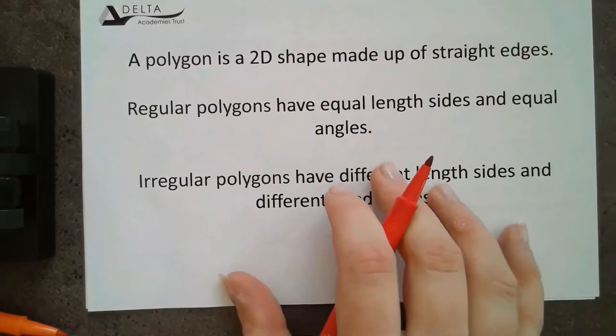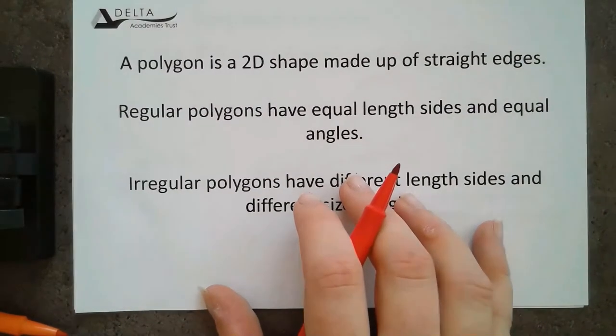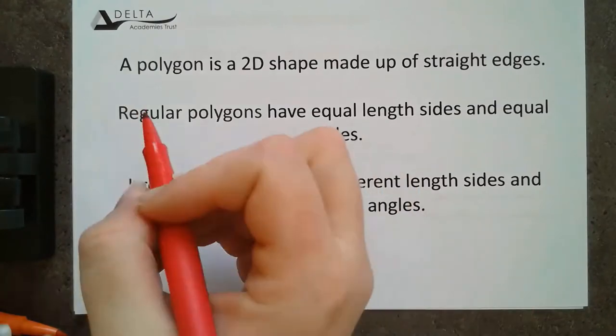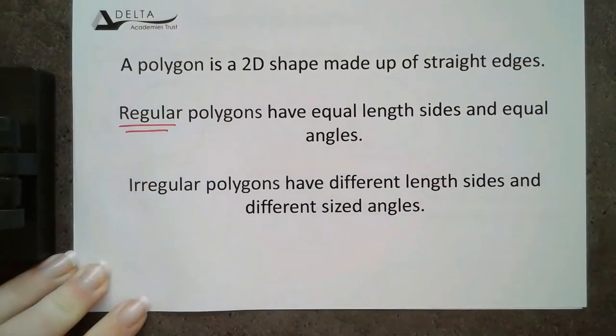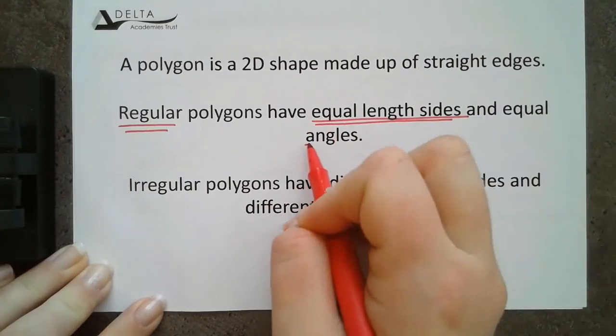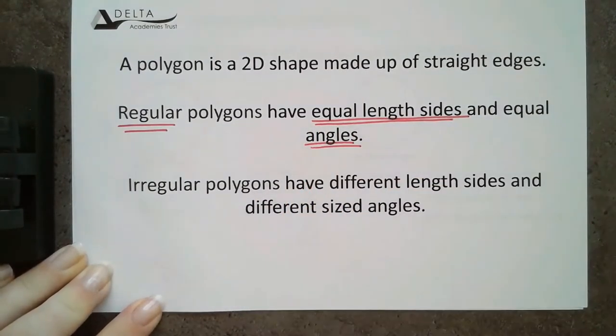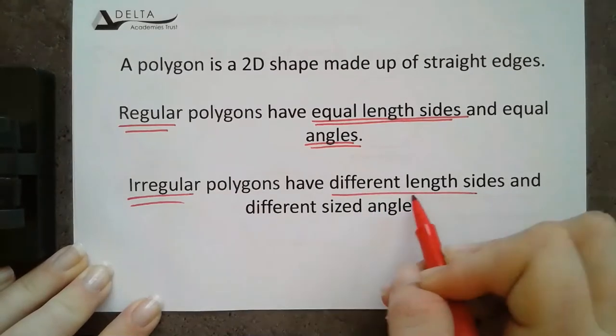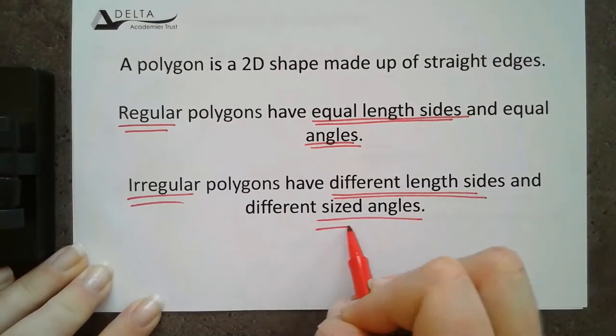So, a polygon is a 2D shape made up of straight edges. Regular polygons have got equal side lengths and they've also got equal angles. Irregular ones, they've got different side lengths and different sized angles.